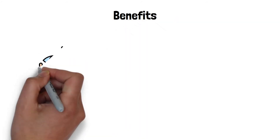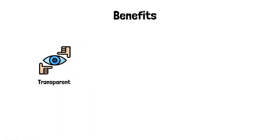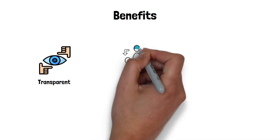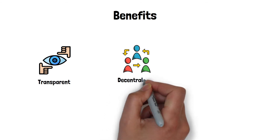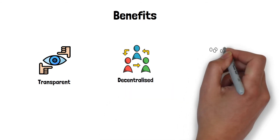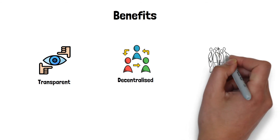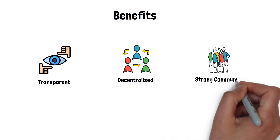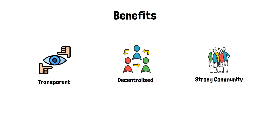There are several benefits to using a DAO to run an organization, such as transparency — since all actions of a DAO are public, this builds trust with the community. Decentralization — DAOs eliminate the need for central hierarchies like management boards. And a strong sense of community — people in a DAO feel valued and often more engaged because they have a say in the future of the organization.